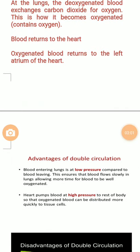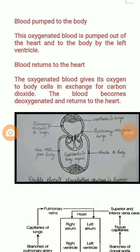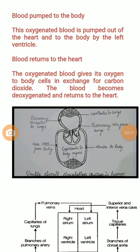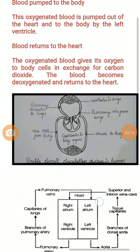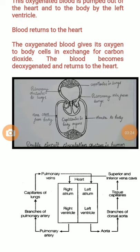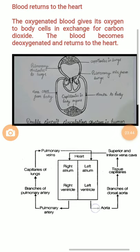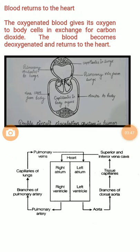This oxygenated blood is pumped out of the heart and to the body by the left ventricle, passing through the aorta — the largest artery of the human body. The blood then delivers its oxygen to the body cells and tissues. The cells take the dissolved oxygen from the blood and release carbon dioxide in return. The blood becomes deoxygenated again and returns to the heart through the vena cava.